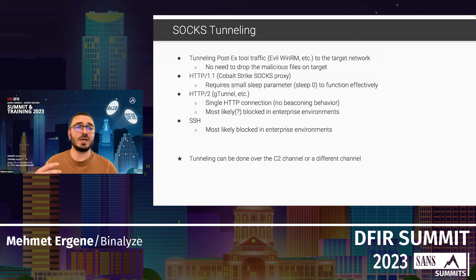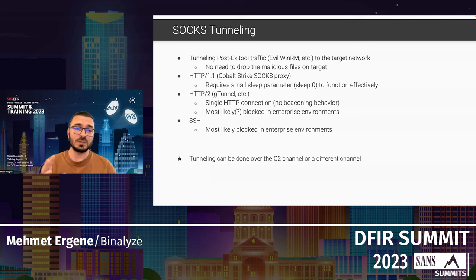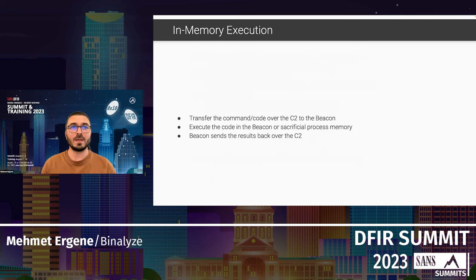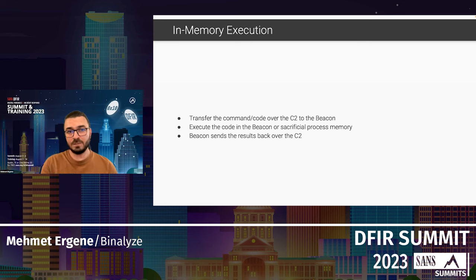All this tunneling can be done over the C2 channel itself or a separate channel — for example, a different malicious or even benign infrastructure on the internet. In-memory execution is also common: attackers transfer commands, code, or tools to the beacon over the C2 channel and execute them in the beacon's memory or a sacrificial process memory, then send results back over C2 — without dropping files to disk.